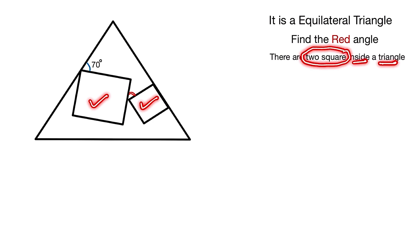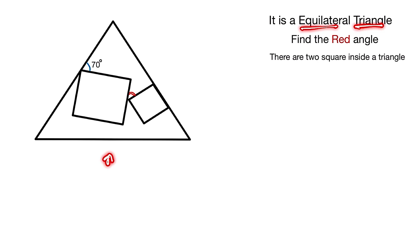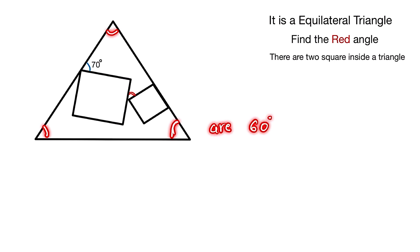Since this is an equilateral triangle, all sides are equal and all angles are equal — each angle is equal to 60 degrees. Now we construct from a square to the length of the triangle.